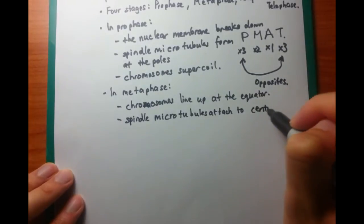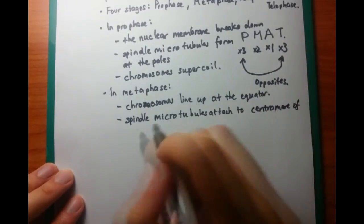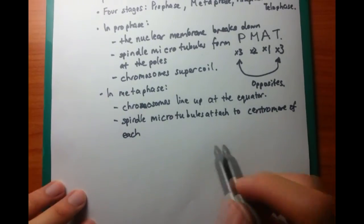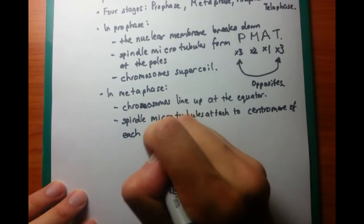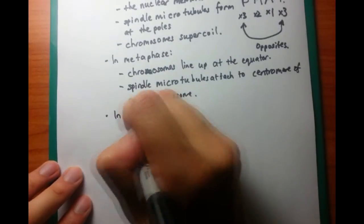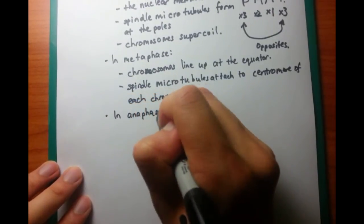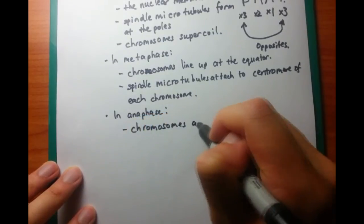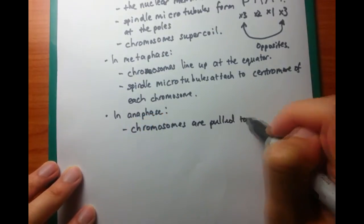After they've done that, then we move on to the third phase, which is anaphase. Anaphase starts with an A, and A is also the first letter of away. So what happens is that the chromatids, which are pulled apart to opposite poles in anaphase, that's what happens there. And now, as I finish writing off this about anaphase...